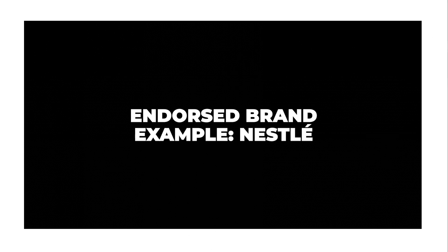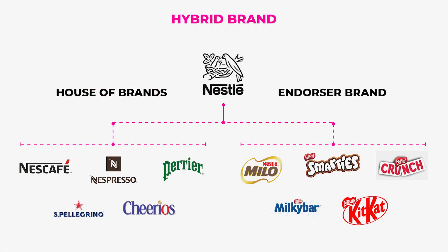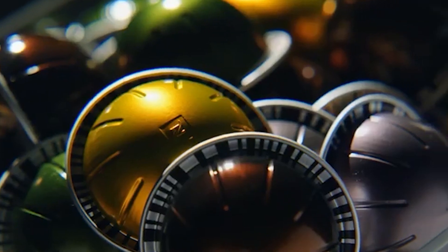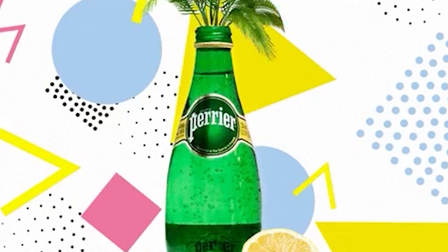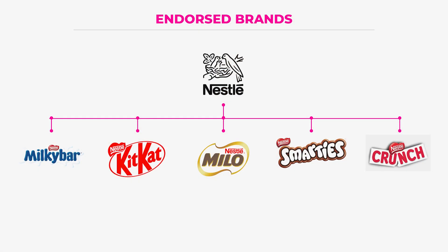Nestlé is a picture-perfect example of an endorsed brand strategy. It's a hybrid in brand architecture — both a house of brands and an endorser brand — with a broad portfolio including well-established brands it doesn't endorse in the traditional sense, such as Nescafé, Nespresso, San Pellegrino, and Perrier. As an endorser brand, Nestlé brings huge brand equity and reputation, while also establishing endorsed brands as big hitters in their own right, including KitKat, Milky Way, Smarties, and Nesquik.